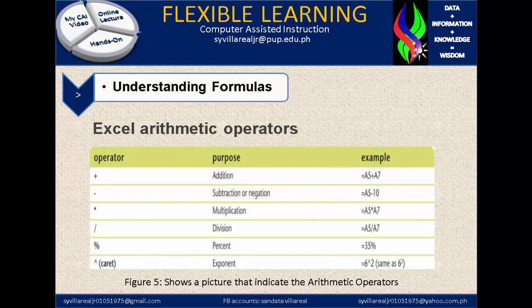Next, we have the minus sign, which is subtraction or negation. As an example, A5 minus 10. It becomes negation when the negative sign is at the beginning after a cell — for example, equals negative A5 plus 10. So it is not called negative, but it is called negation.